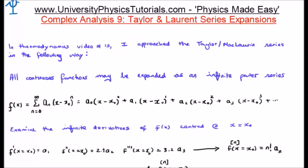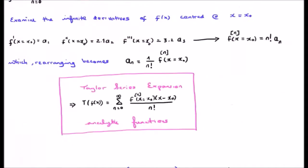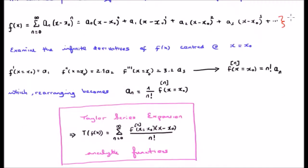All continuous functions may be expanded as an infinite power series in the following manner. Let's examine the infinite derivatives of f(x) centered at x equals x0. Let's start taking the derivatives of this function up here and see what happens. The first derivative is going to be a sub 1. That's because this term here is going to go to 0 and all the other terms will be 0 because they will still have an x minus x0 component which will go to 0 when we let the function go to x0.